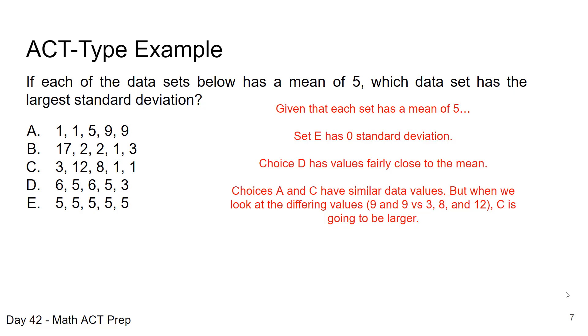Also notice that A has 5, has that value of 5, and we know that that almost cancels out, making it a difference of 0. So we're only really looking at the two 9s in A, which are 4 units away from 5. And in there with C, we have both 3, which is 2 units away, and you have 8, which is 3 units away, and then 12, which is 7 units away.